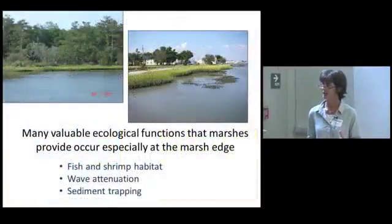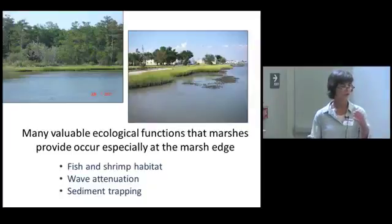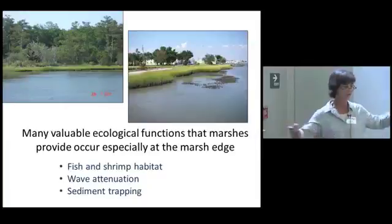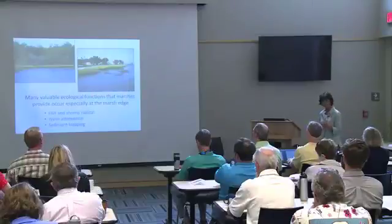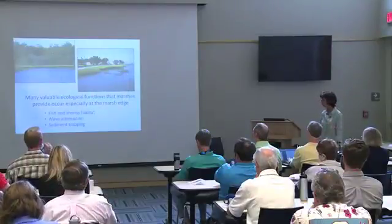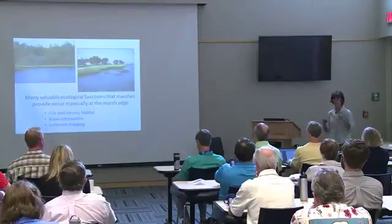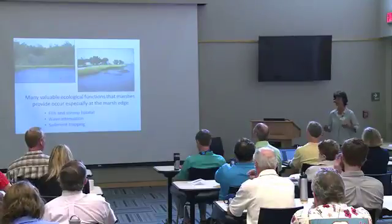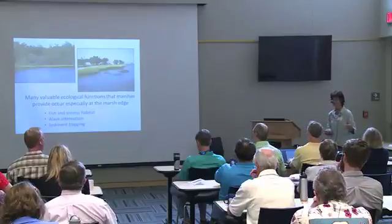A lot of the ecosystem services happen primarily at the marsh edge. Even a fairly narrow marsh — 10 to 20 meters wide — can provide many of these services. Research has shown that fish and shrimp utilization is primarily at the marsh edge. Wave attenuation happens at that marsh edge, and sediment trapping also occurs primarily there. You don't need hundreds of meters of marsh to achieve significant benefit.